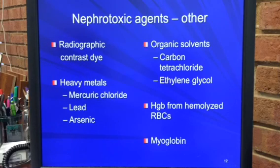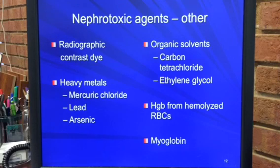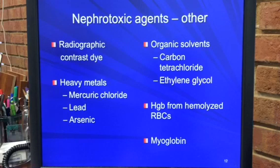Heavy metals and organic solvents are also nephrotoxic. If a patient is given the wrong blood type and the red blood cells hemolyze, the released hemoglobin can also cause kidney damage.